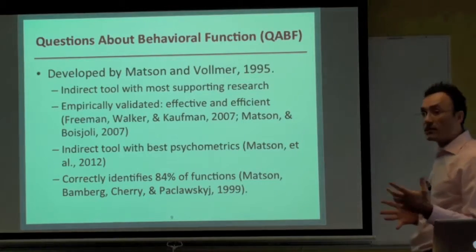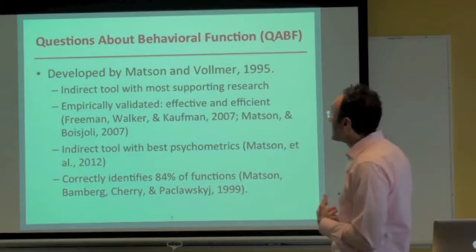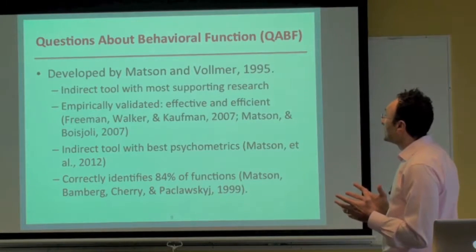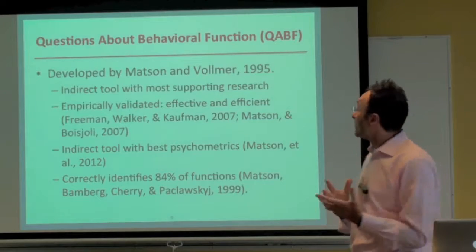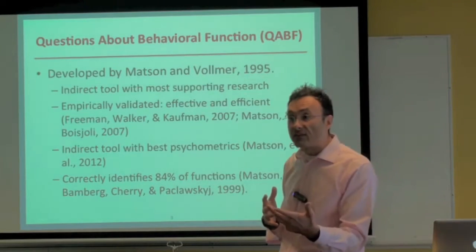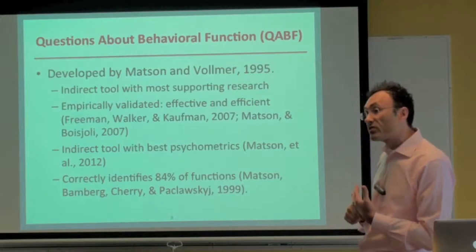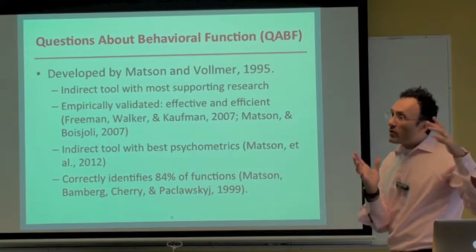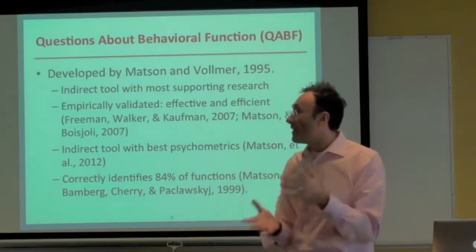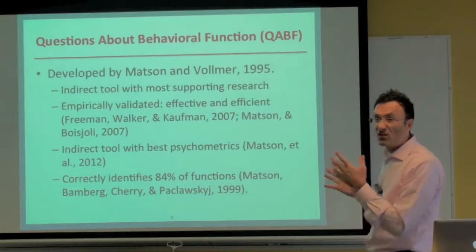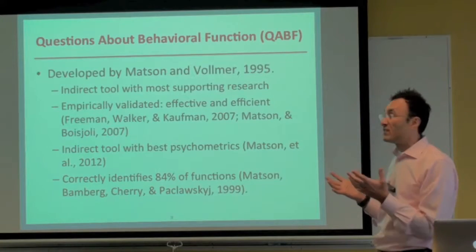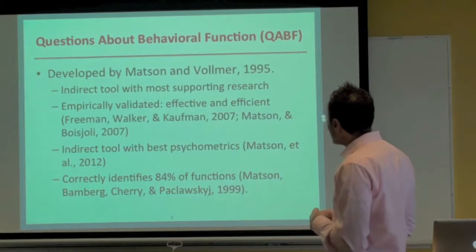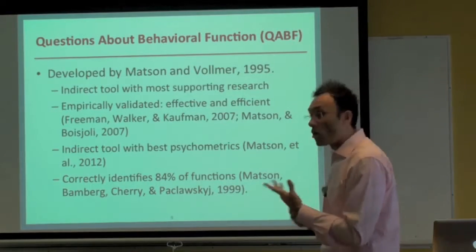The QABF is more recent — developed by Matson and Volmer in the mid-1990s. It is the indirect assessment tool with the most research behind it. It's empirically validated, effective, can correctly identify function about 84% of the time, and is efficient — taking about 12 minutes to administer and 2–3 minutes to score. It also has the best psychometrics of any indirect tool, in contrast to the MAS.